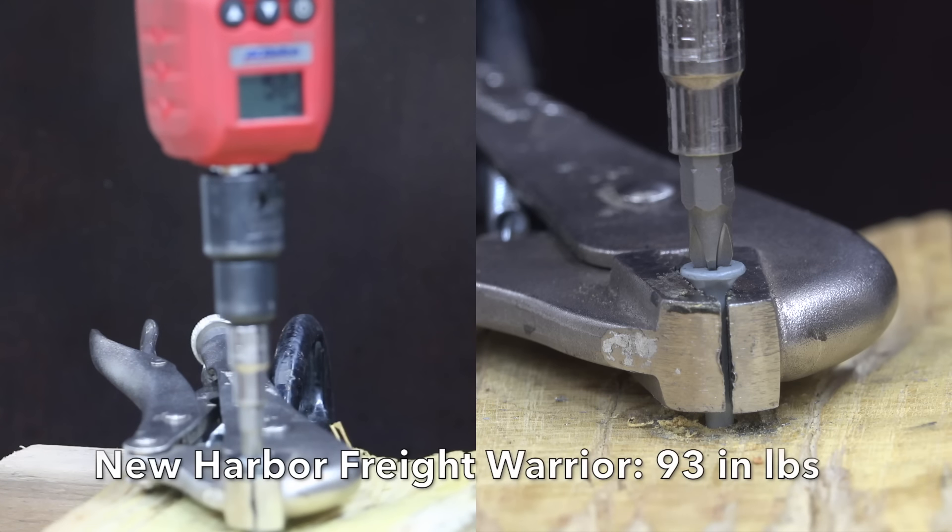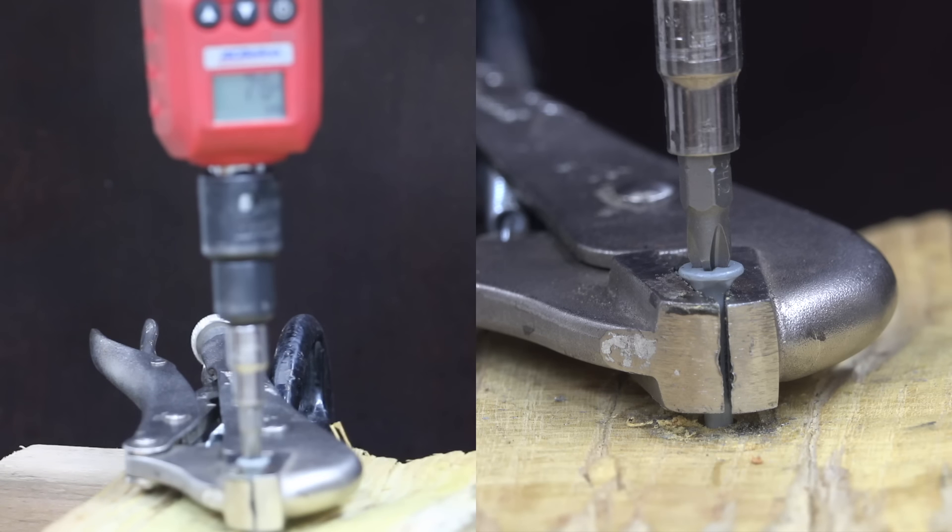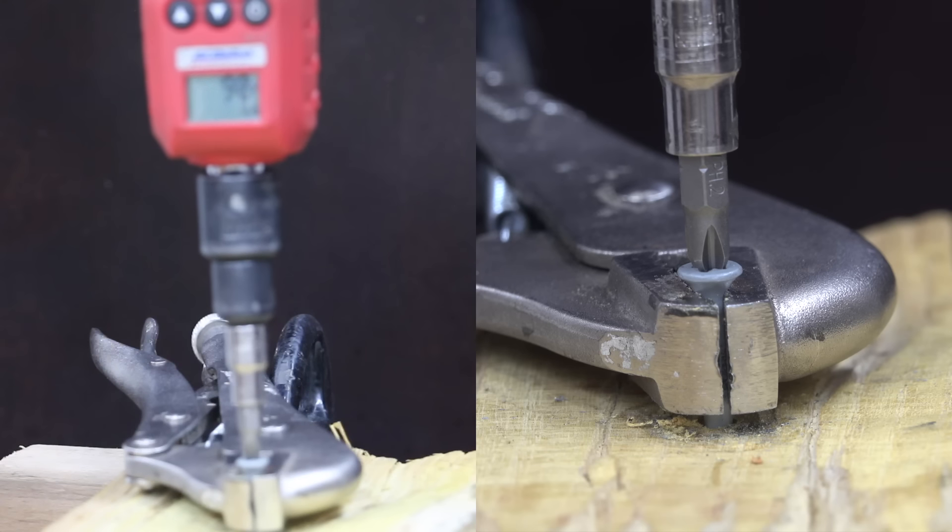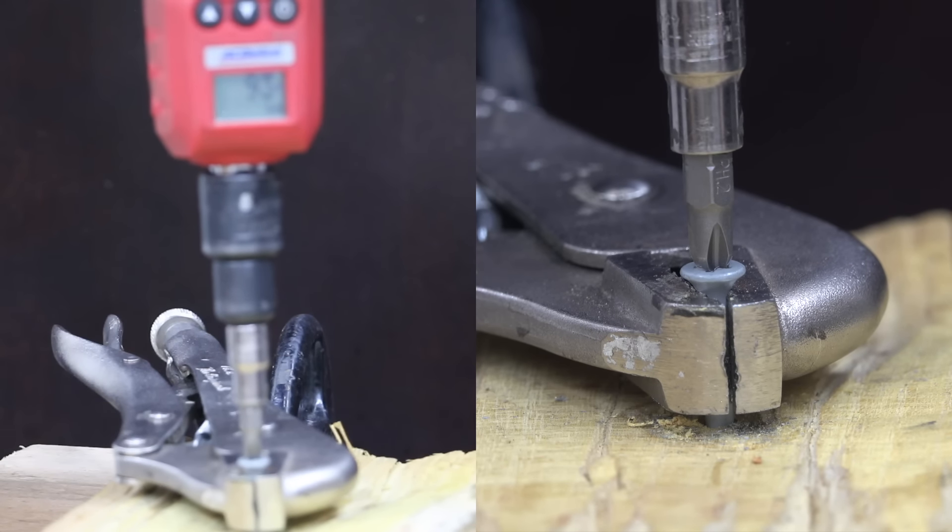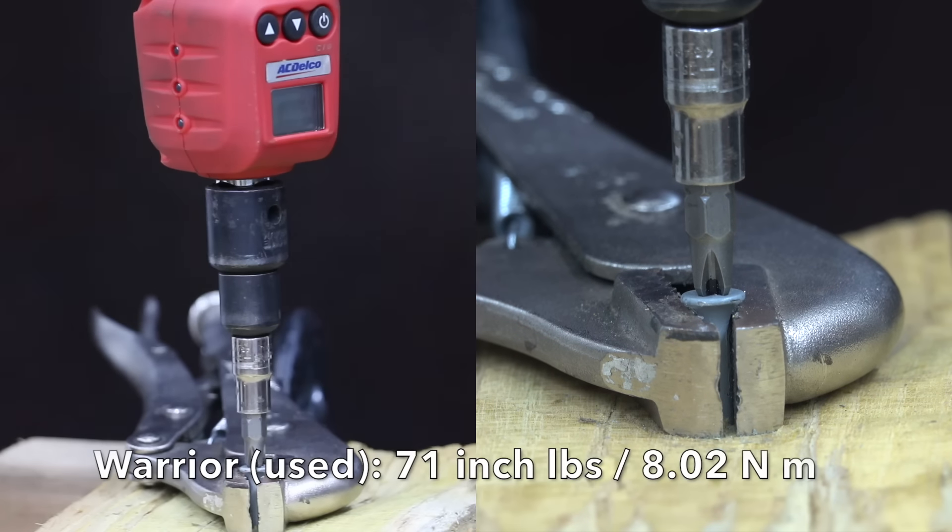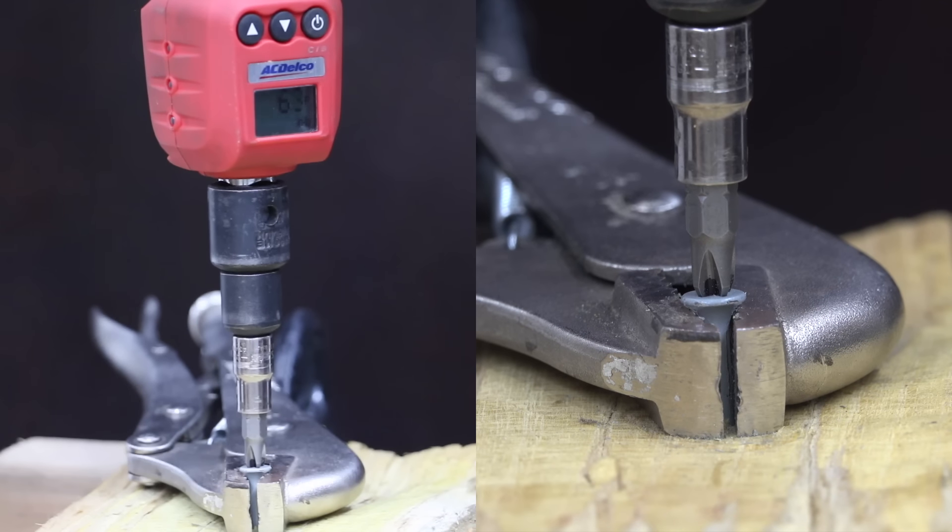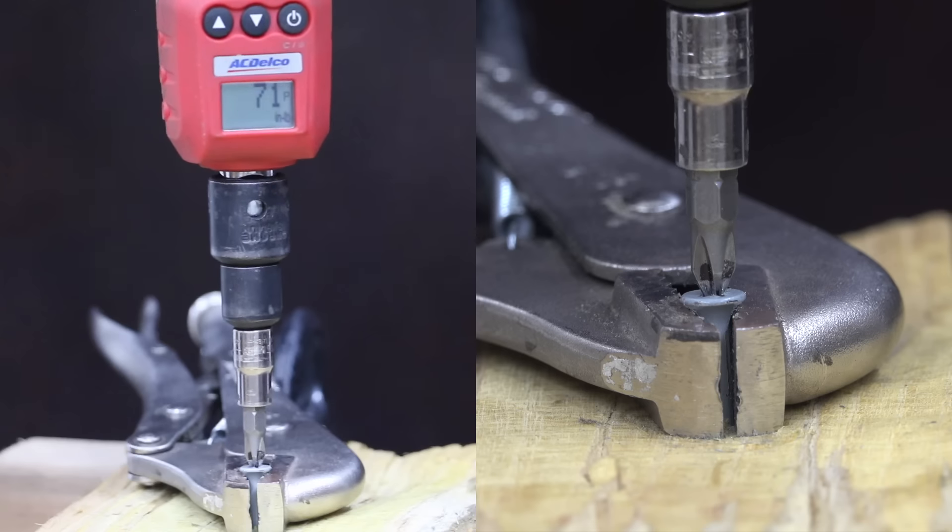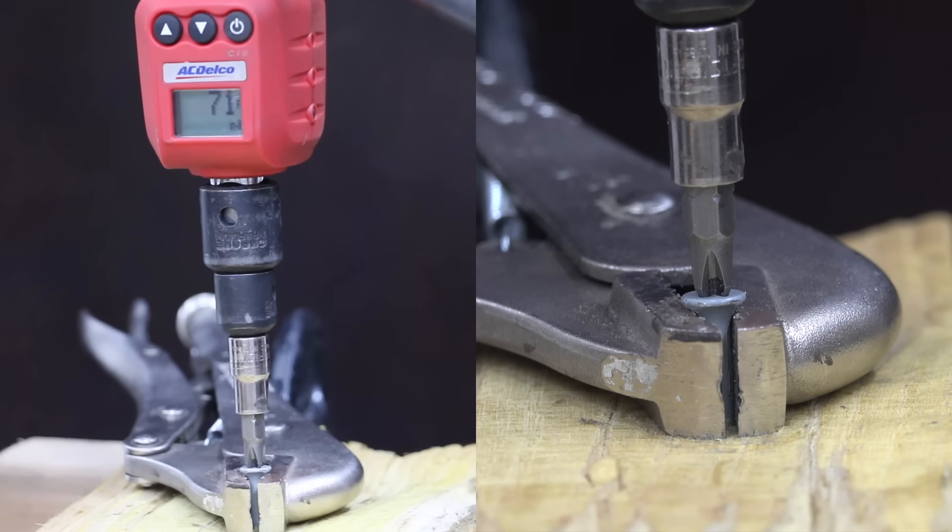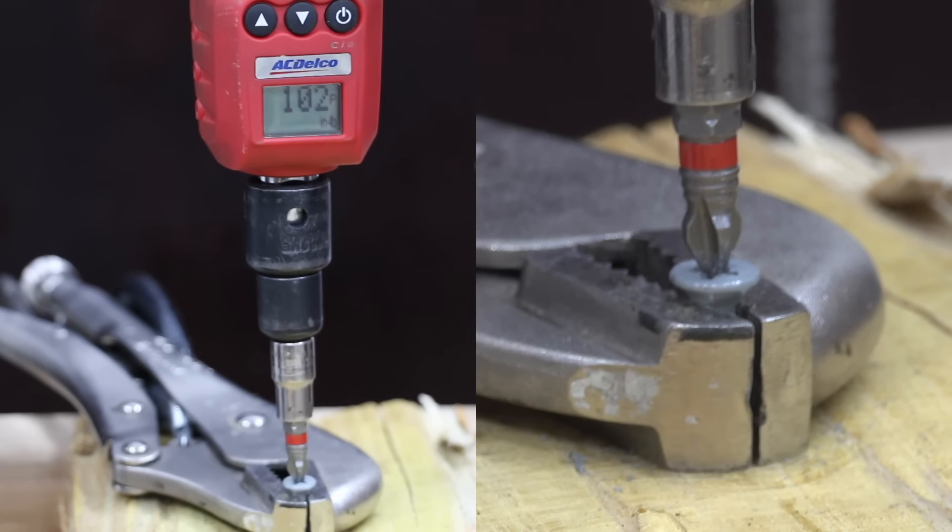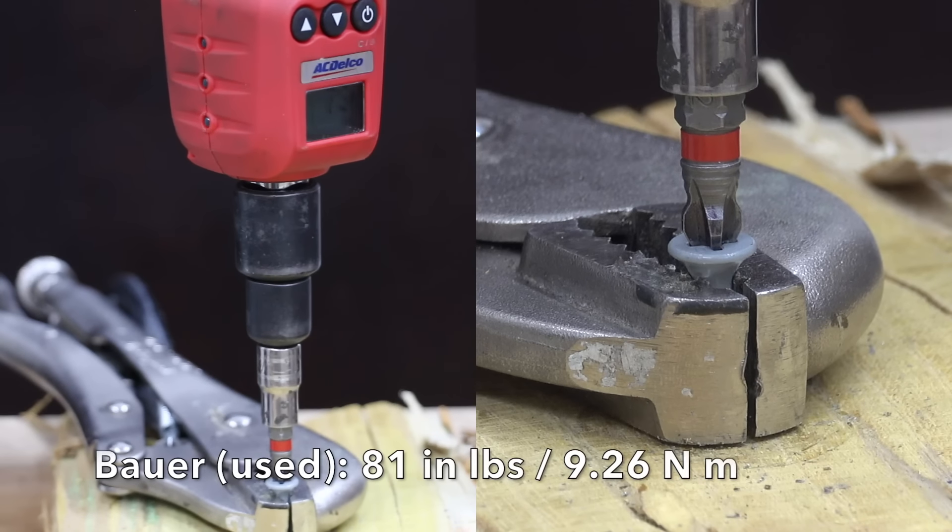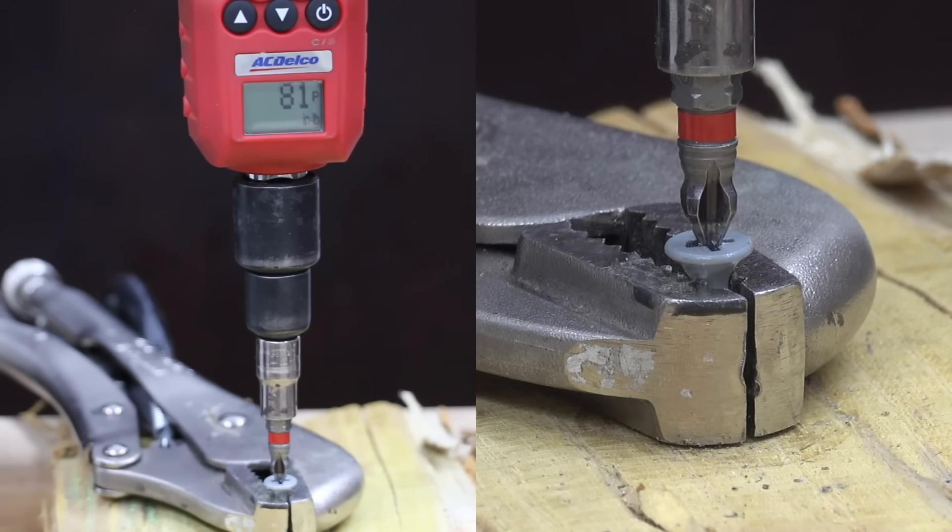With 27.2 pounds of downward force on the impact driver bit, instead of camming out, the new Harbor Freight Warrior snapped at 93 inch pounds, exposing the weakness of using an impact driver bit that's not designed for high torque use. After installing a new screw, the Harbor Freight impact driver bit that was used to install 100 screws was tested and actually did well, camming out at 71 inch pounds. The new Bauer did very well camming out at 102 inch pounds. The used Bauer did better than the Warrior camming out at 81 inch pounds. Very impressive.